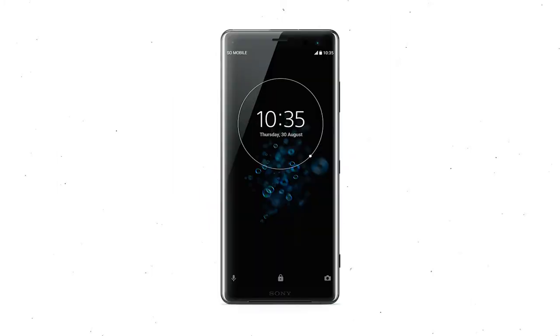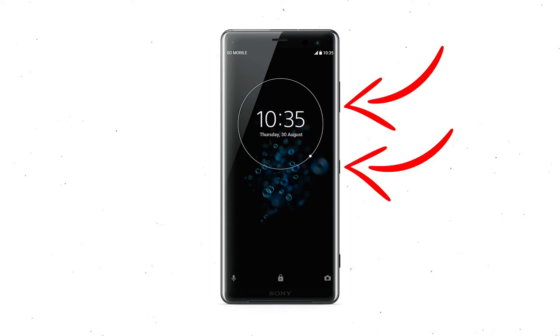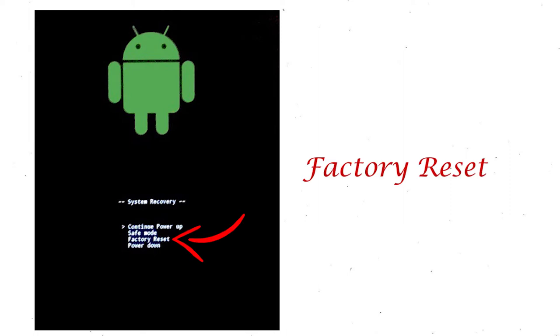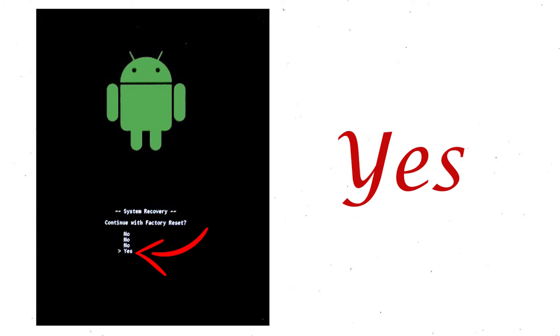Power off your mobile by holding the power button. Press and hold the volume down button and power button. When you see the recovery mode screen, release all the buttons. Select factory reset using the volume buttons to navigate and confirm with the power button. Finally, choose the yes option.